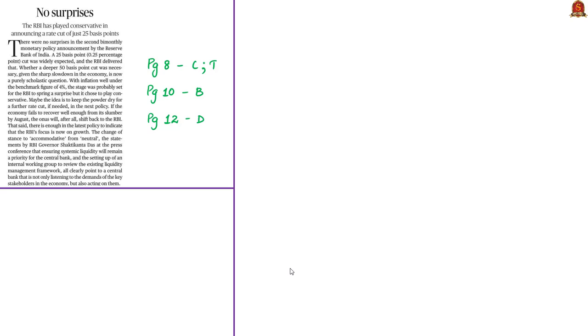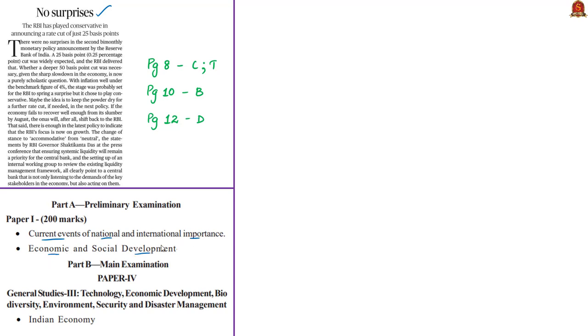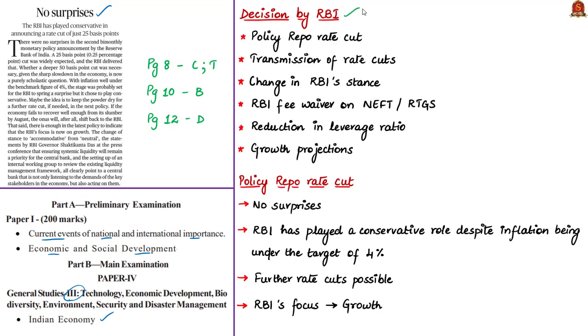Next, we shall see the editorial titled 'No Surprises.' This editorial is relevant in prelims under current events of national importance and economic development, and in mains under General Studies Paper 3. The author discusses RBI's recent decisions: the policy repo rate cut, the problem of rate transmission, the change in RBI's stance, the decision to remove charges on NEFT and RTGS transactions, the reduction in leverage ratio, growth rate projections, and suggestions to the new government.